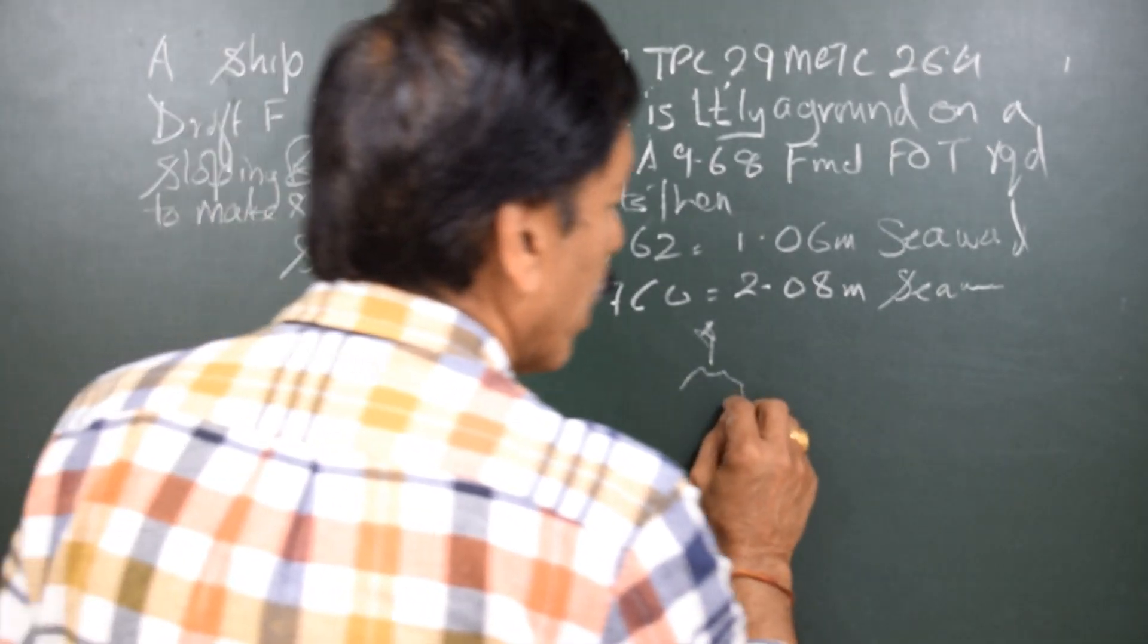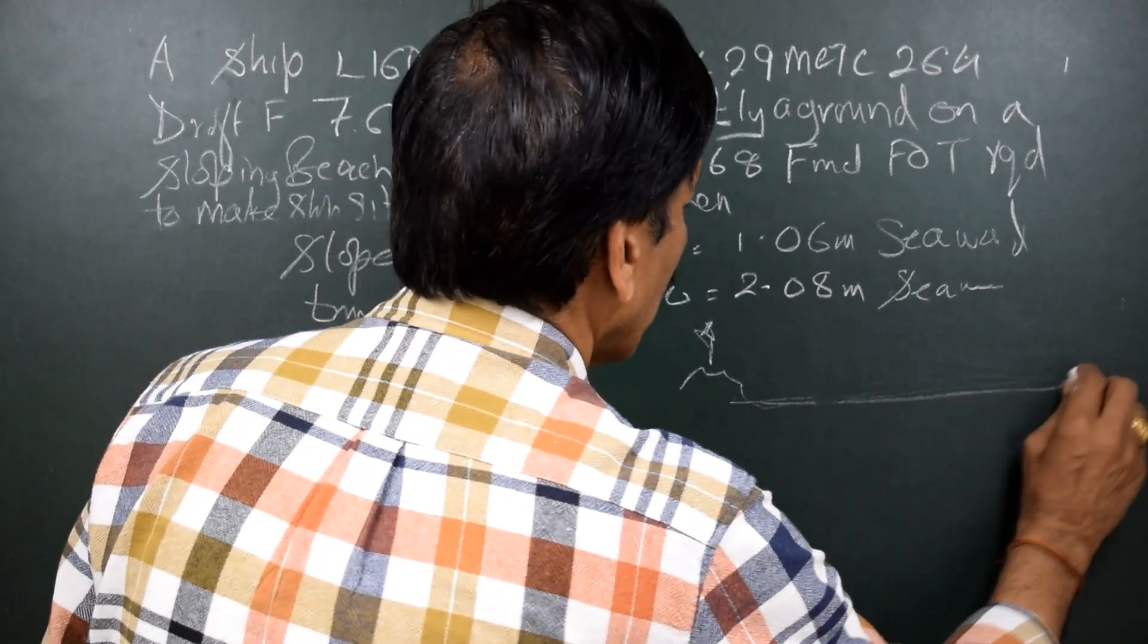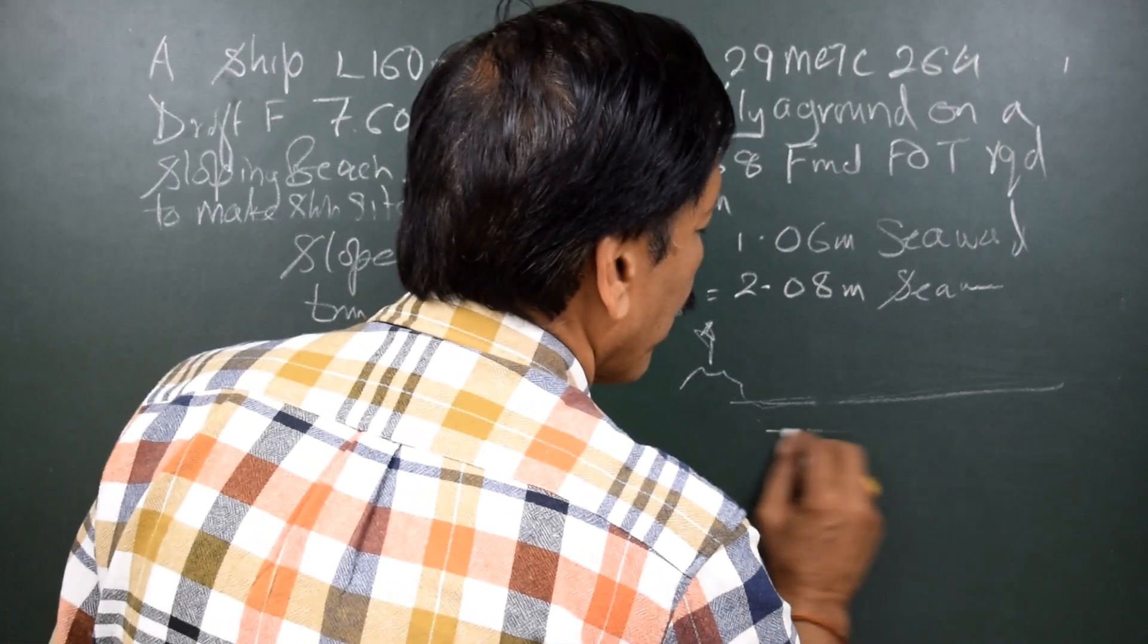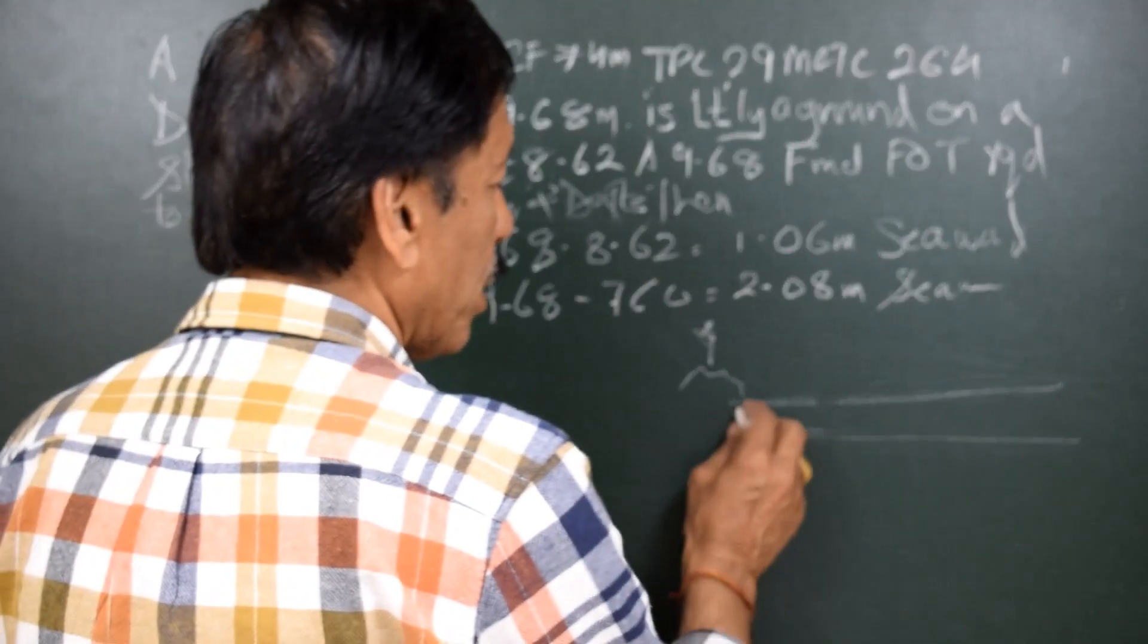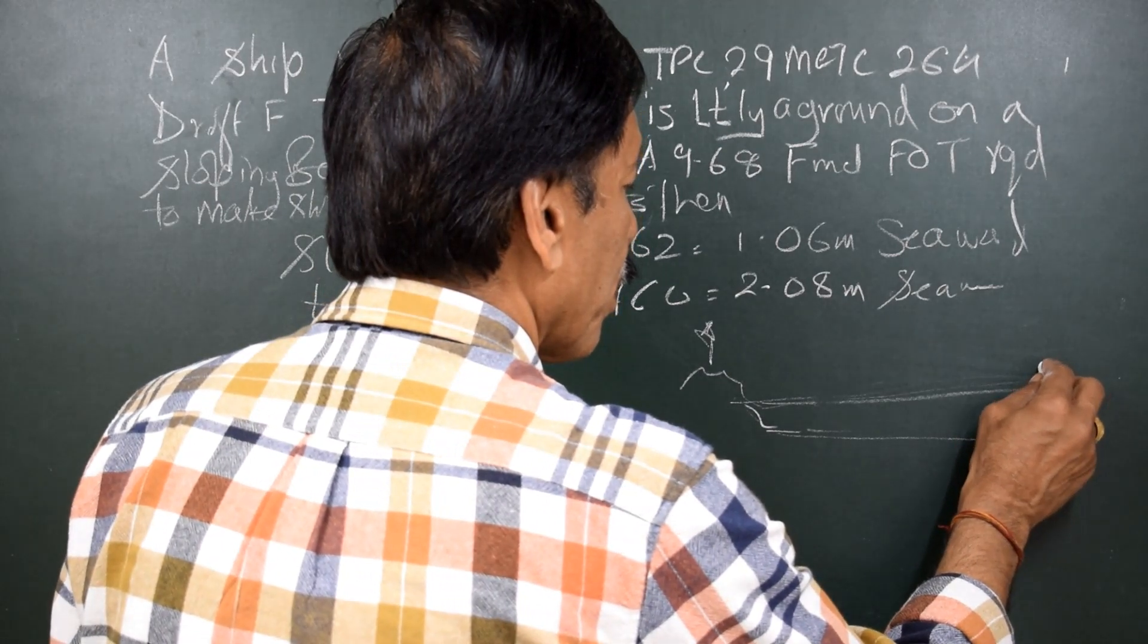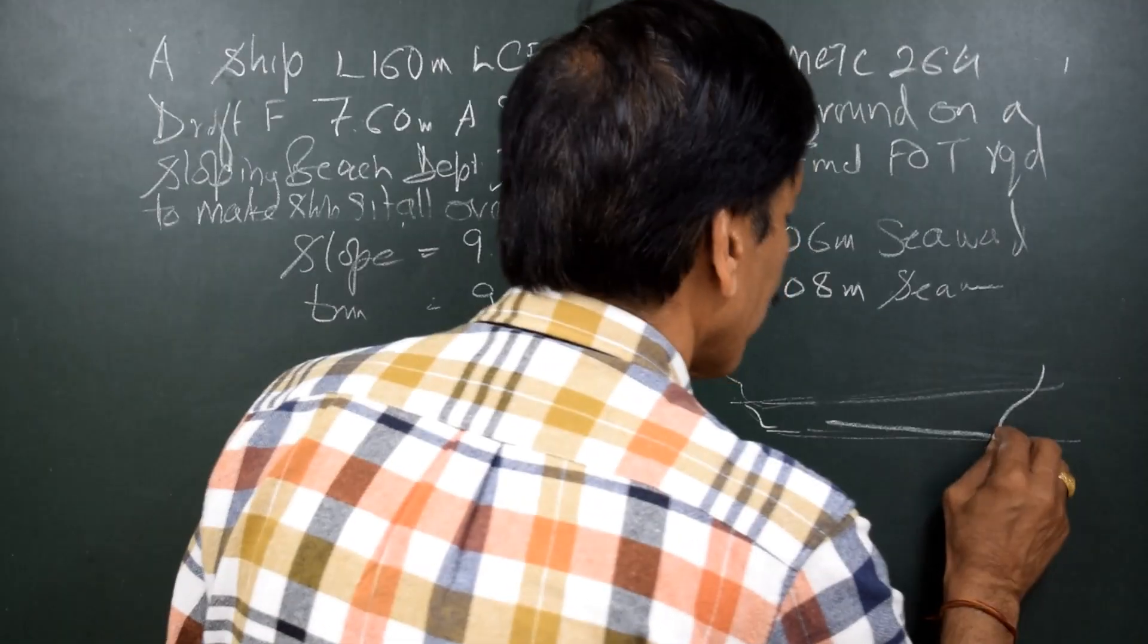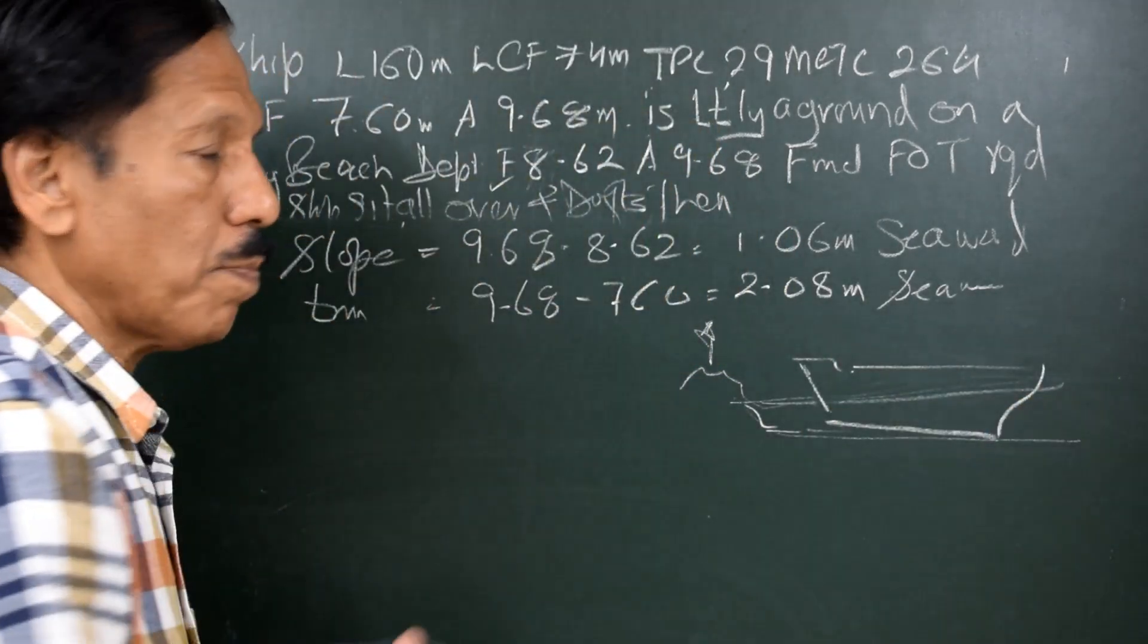So if we look at a situation, suppose this is the coast and here is the water. Water level is always horizontal and let us say this is the beach gently sloping. And there is a ship which touches aft. Why I say that the ship touches aft?